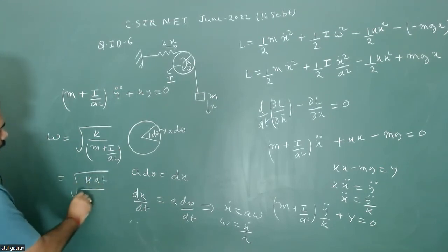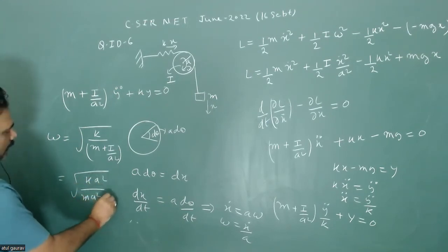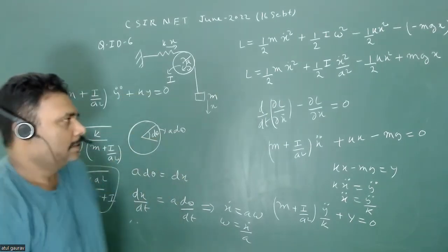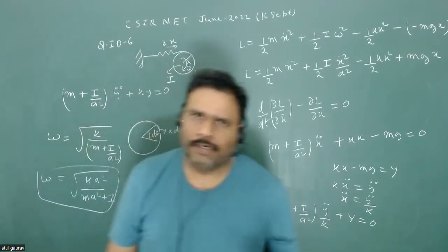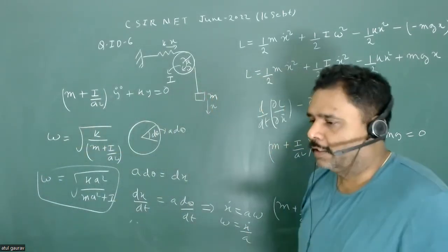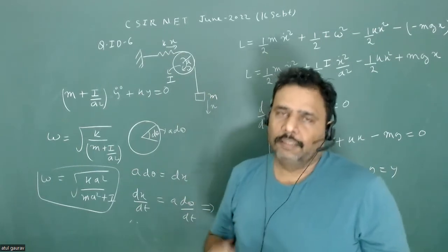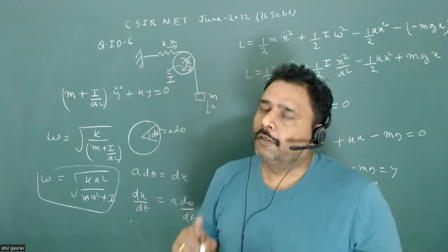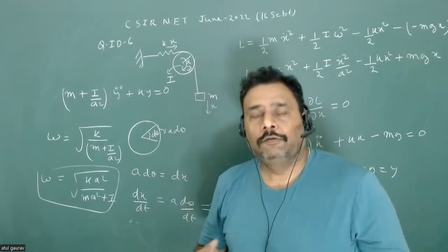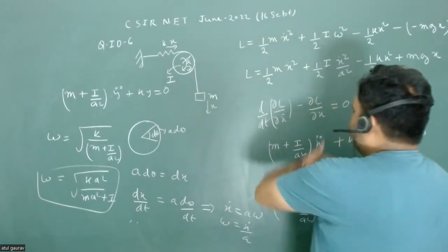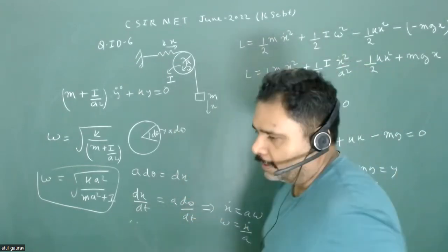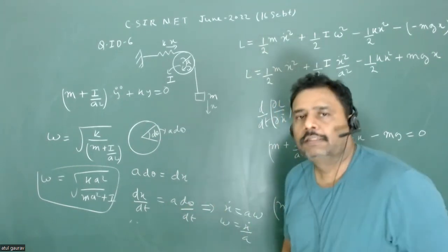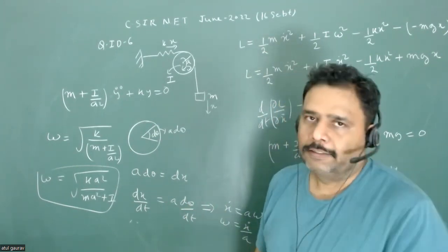This can also be written as omega = sqrt(k a² / (m a² + I)). This is the angular frequency of the system. It's a fantastic question because you need to understand how to write the Lagrangian, the rolling-without-slipping condition, the equation of motion, and the small oscillation approximation. Practice this type of question — it's a very nice one. Thank you.